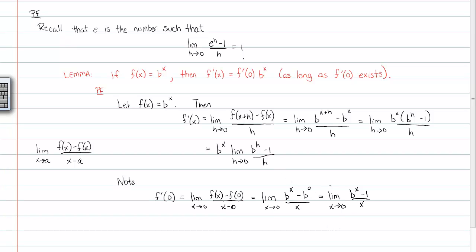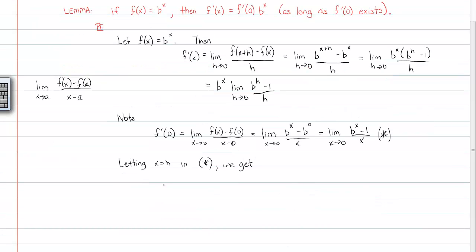That's what f prime of zero actually is. If you notice, allowing x to just call x h in this case up here, which I call star, we're going to let x equal h in that last statement we made. We get that f prime, or the derivative of f at zero, is equal to the limit as h approaches zero of b to the h, because we're letting x, we're calling x h. It's just a different symbol; there's nothing wrong with that.